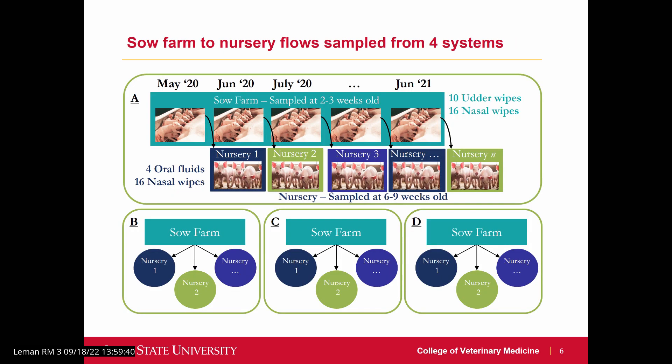We utilized active surveillance to characterize the contribution of vertical transmission from a sow farm to the downstream flow for influenza virus. We sampled flows from four different production systems from across the United States monthly for a period of 12 months. We sampled groups of piglets twice: once in the sow farm when they're two to three weeks old, and a second time in the nursery when they're six to nine weeks old.